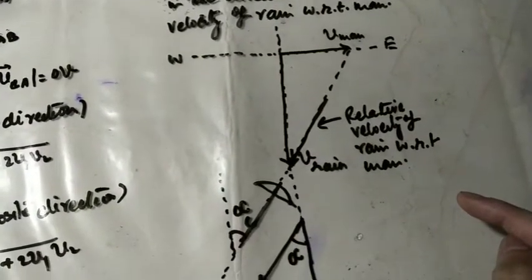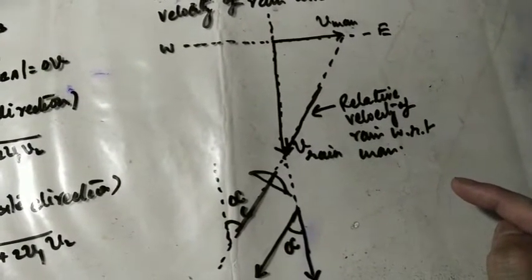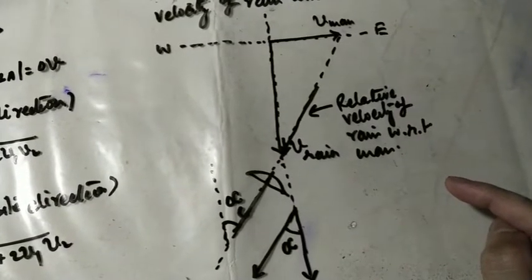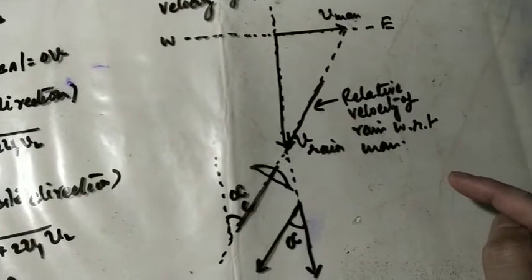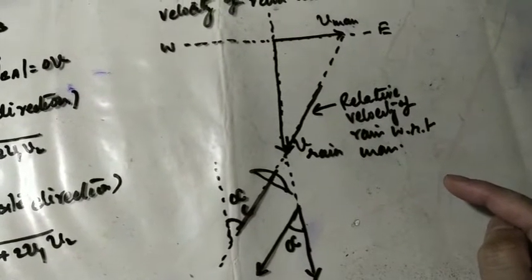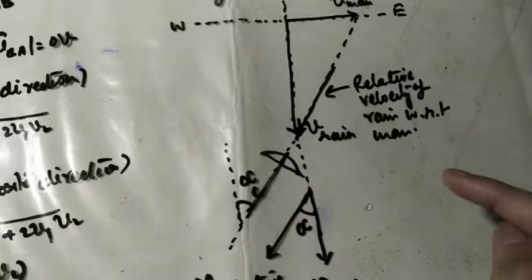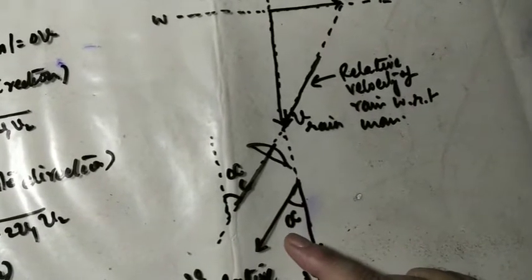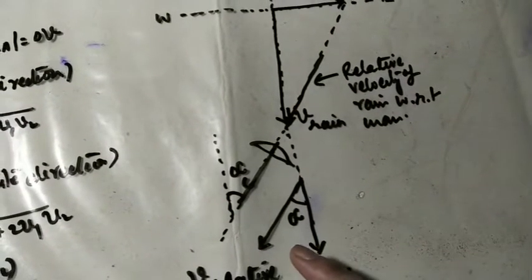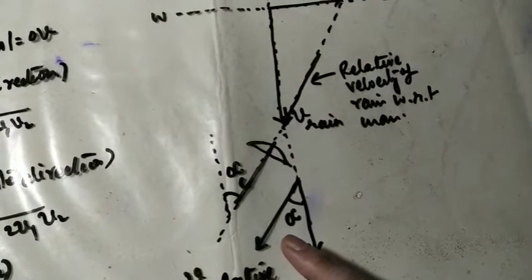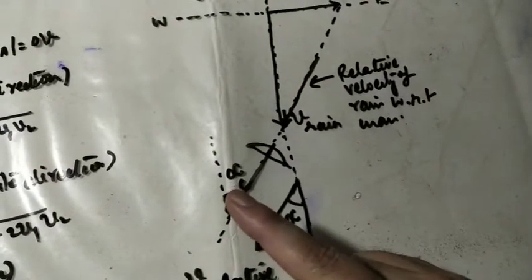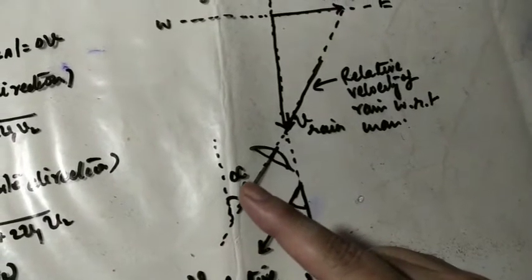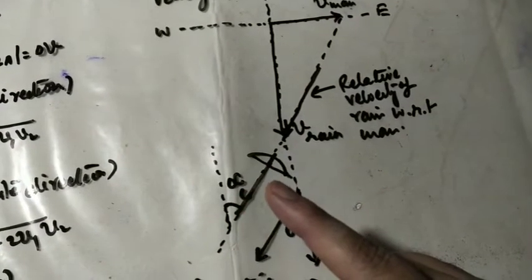You have to complete the diagram, taking suitable scale and with proper measurement. You see that direction of relative velocity is at angle alpha from vertical. So you have to hold umbrella at angle alpha from vertical towards east.